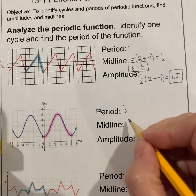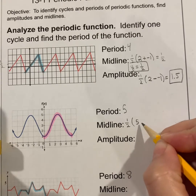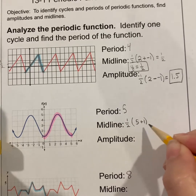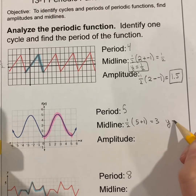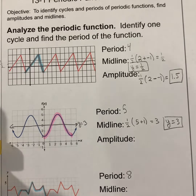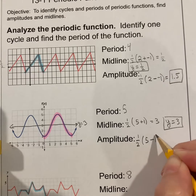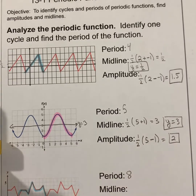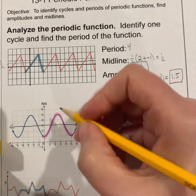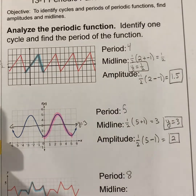The midline for this next one: the formula is one half of the max plus the min. The max is five, the min is one. Five plus one is six, and half of six is three. So the midline is y equals three. I'll draw that in — it's in the middle of the periodic function. For the amplitude: one half times the max, five, minus the min, one. Five minus one is four, and half of four is two. The amplitude of this periodic function is two. From the midline to the highest point is two, and from the midline to the lowest point is two.